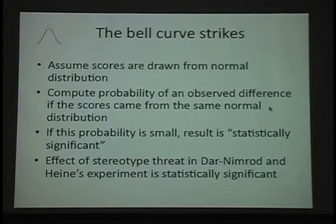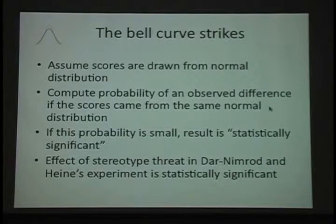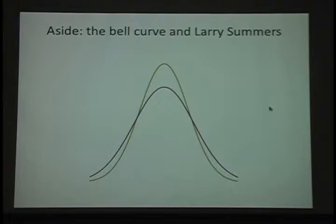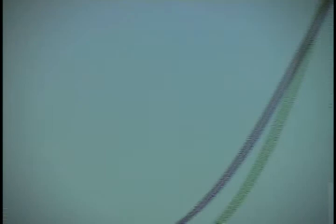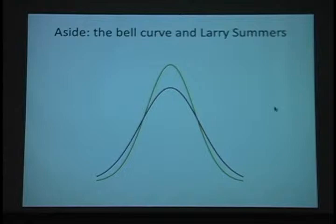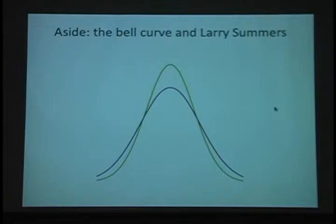Larry Summers was president of Harvard when he mused in an ill-considered public address that perhaps the reason there weren't so many women math professors was because men were better at math. He was referring to data showing that when you compare distributions of scores on math tests, the lower curve tends to match results for males and the higher curve for females. The lower curve has more at the high end — so there's a higher proportion of men at the top end of SAT scores, which has been true for 30 years, though it's narrowing.